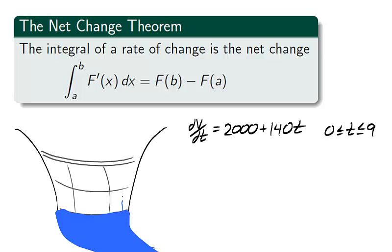For example, if it is known that a dam is leaking at a rate of 2000 plus 140t gallons of water per minute from time t equals 0 to t equals 9 minutes. The net amount of water which is leaked from the dam over the 9 minutes is the integral from 0 to 9 of dv dt.